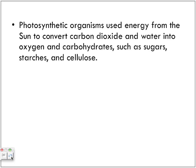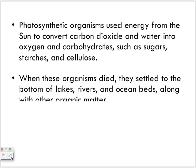Photosynthetic organisms use energy from the sun to convert carbon dioxide and water into oxygen and carbohydrates — sugars, starches, and cellulose. These plants undergo photosynthesis, converting light energy from the sun and carbon dioxide in the atmosphere along with water to produce glucose, C6H12O6, and oxygen. The carbohydrates they produce are organic compounds.